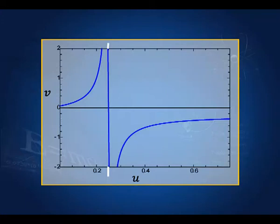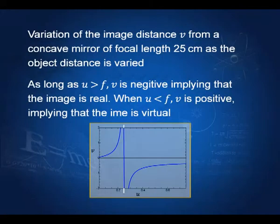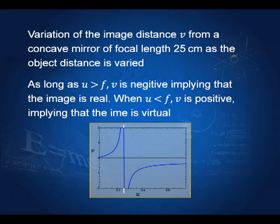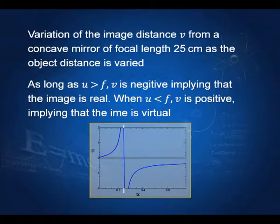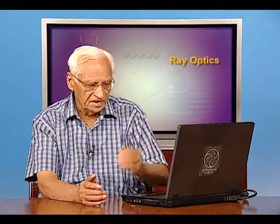I will show you this slide which shows the relation between V and U for a concave mirror. This is for a concave mirror of focal length 25 centimeters. As long as U is such that the object is away from the focus, V is always negative, meaning the image is always real. When U is less than the focal length — that is, the object is nearer to the mirror than the focal length — V becomes positive, showing that the image is virtual.